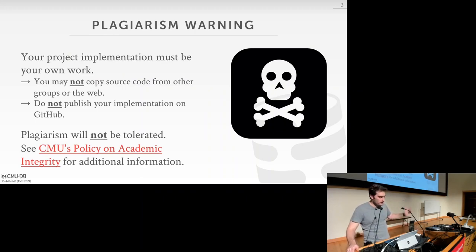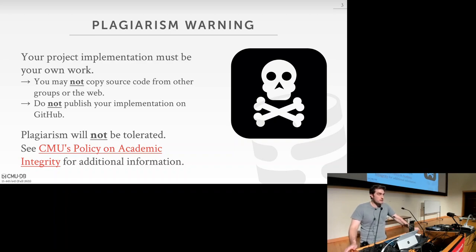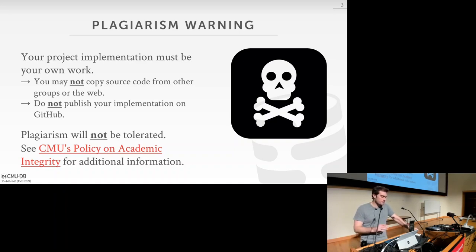A reminder about the plagiarism warning: your project implementation has to be your own work. You're not allowed to copy source code from other students, other groups, or on the internet. Please don't publish your implementations on GitHub or otherwise make them publicly available, because that allows other people to track them down and copy them. If you're confused, take a look at the academic integrity policy, or contact me, one of the TAs, or post on Piazza and ask for clarification — it's better to address it beforehand rather than deal with it afterwards.